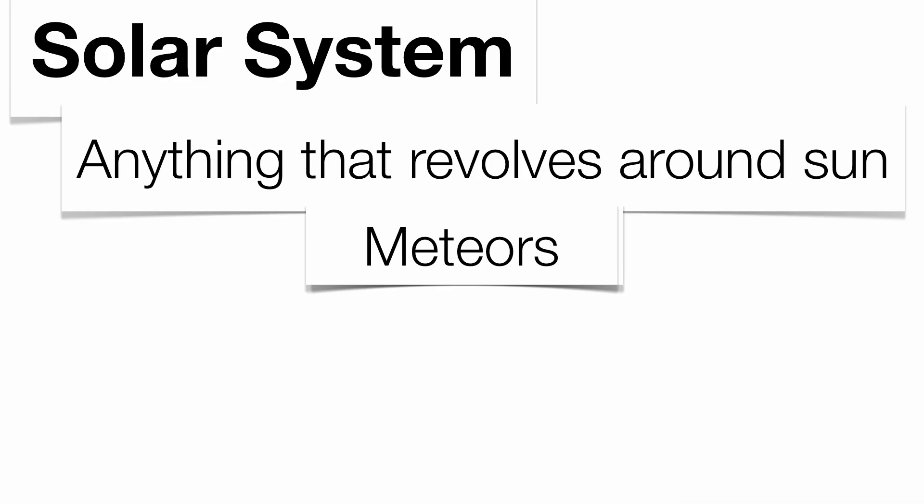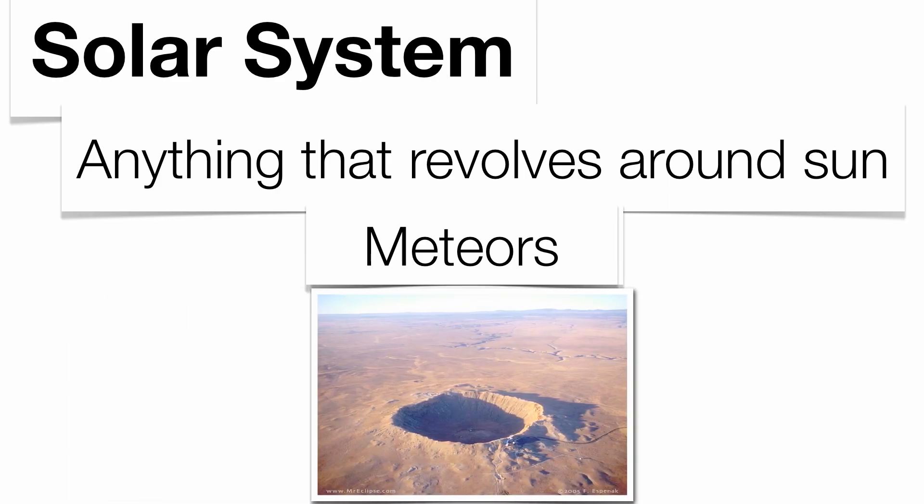When they enter the atmosphere they're meteors, and when they strike the surface they're called meteorites. And when they strike the surface, sometimes they'll make an impact crater.